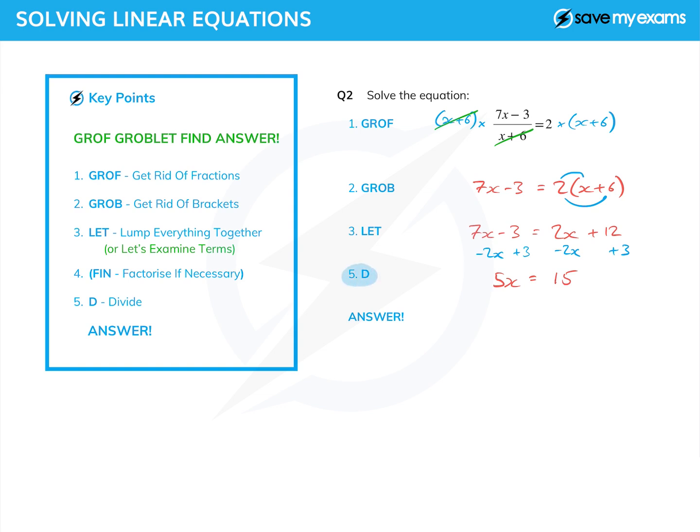And you probably barely need to do the next step but we should just do it. So we divide, very formally here we go, divide both sides by 5 because that's what's next to the x and the 5s on the left cancel and I get left with an answer. My answer is x equals 15 over 5. Well 15 over 5 is 3 and GROFF GROBLET has indeed found the answer.